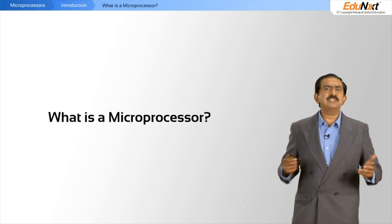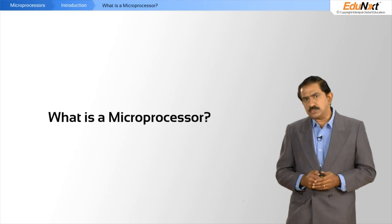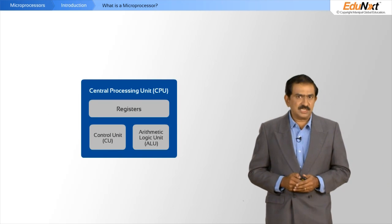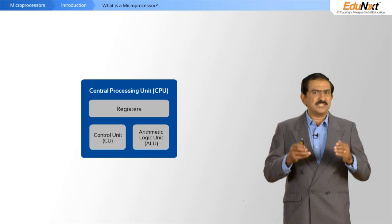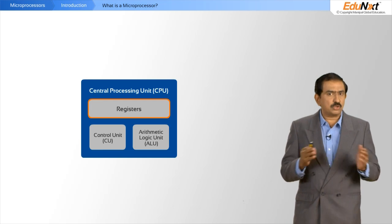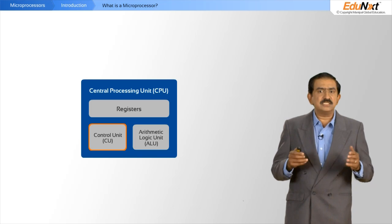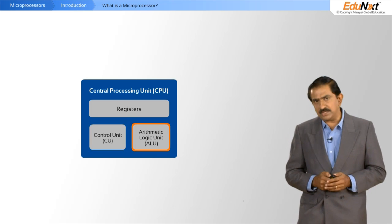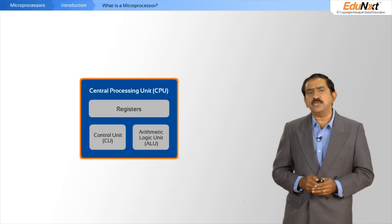So what is a microprocessor? The heart of the microprocessor is called the central processing unit. The CPU consists of a set of registers, what is called the control unit, and what is called the arithmetic logic unit. All of this together is called the CPU.